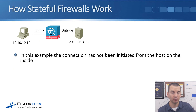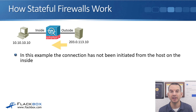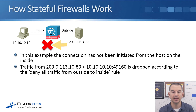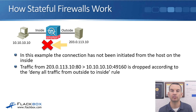In the next example, the inside host 10.10.10.10 has not initiated a connection out to the server. When the external web server tries to send traffic to 10.10.10.10 — from 203.0.113.10 port 80 to 10.10.10.10 port 49160 — it does not match an existing connection in the table. The traffic is dropped according to the deny-all-from-outside rule, with no connection table entry to override it.